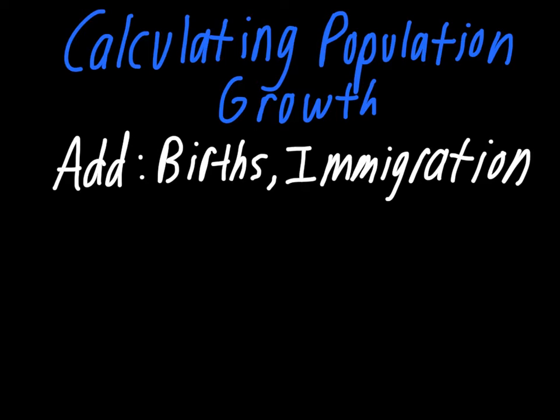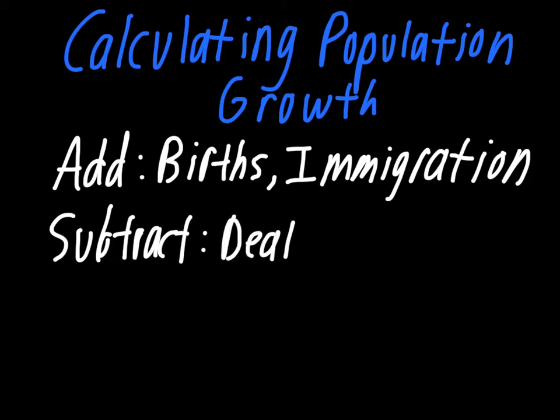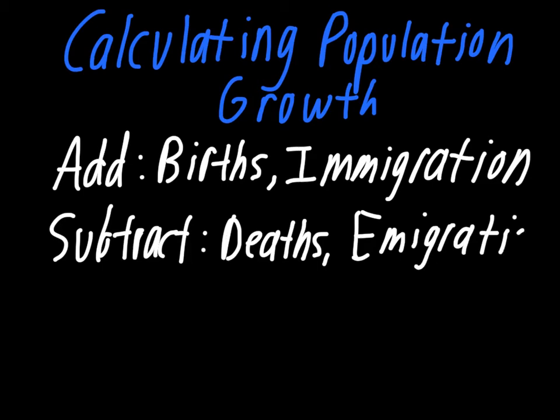There are some things that subtract from a population. Obviously the opposite of births, we could have deaths in a population. And then the opposite of immigration is emigration. These are individuals that are then leaving that part of the population, and they're going somewhere else. So that squirrel we were talking about, he was sort of forced to emigrate and leave and go to a new area.